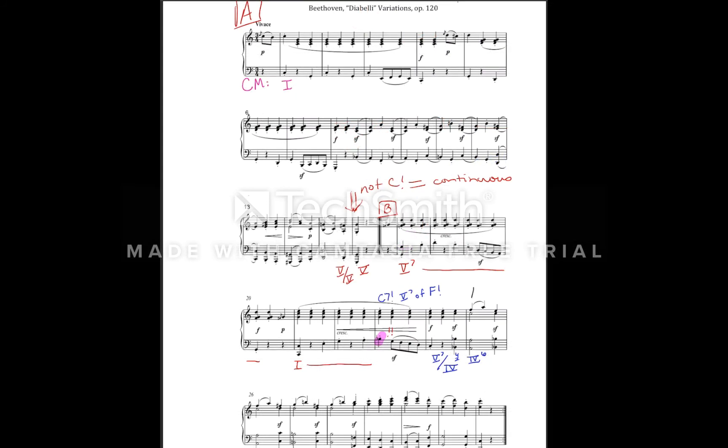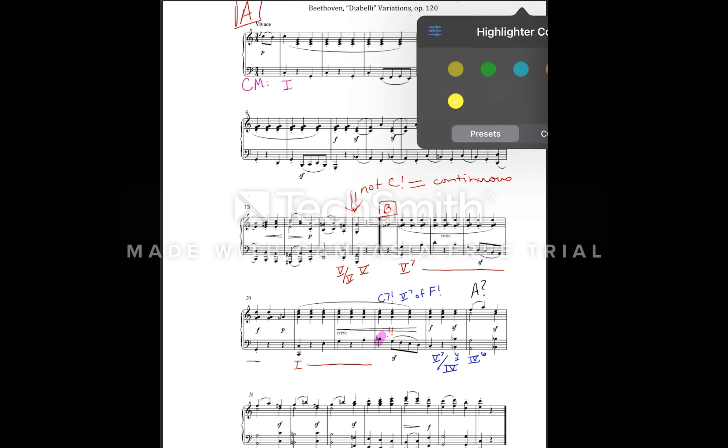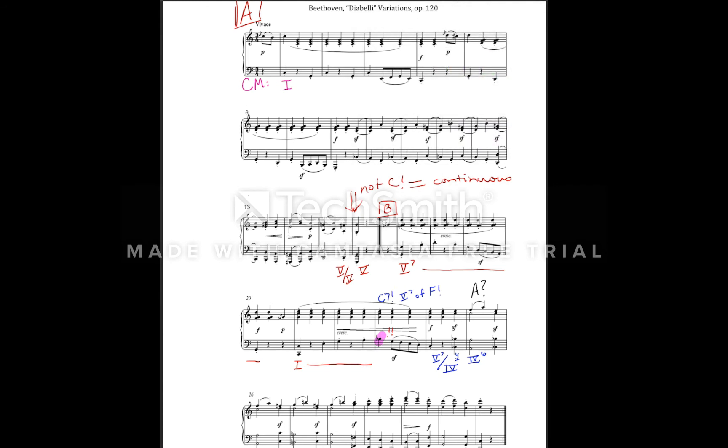This moment is also the moment when a motive from the A section returns. To determine whether this is a rounded binary form, this return needs to be the melody from the very beginning of the piece. So, compare measure 25 to the opening. It looks rather different, and as I look and remember the sound of the opening, I notice that measure 25 is not similar to measure 1, but is very similar to measure 9.